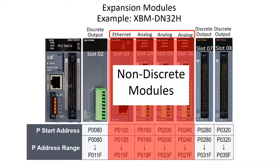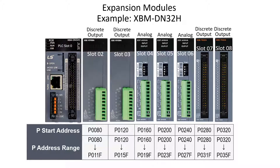Slots 3, 4, 5, and 6 are communication and analog modules. Although non-discrete modules, they are each allocated 64 bits of P data in the configuration. If the Ethernet module is replaced with a discrete output module, the P address range remains the same. The first discrete output in slot 3 will begin with the starting address of P12 bit 0.